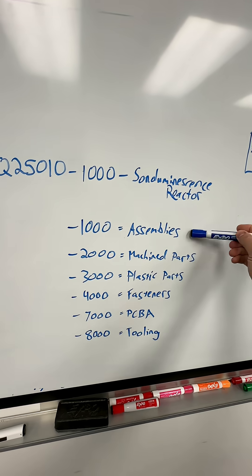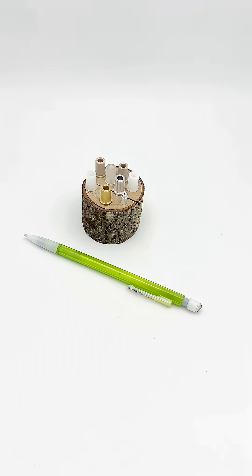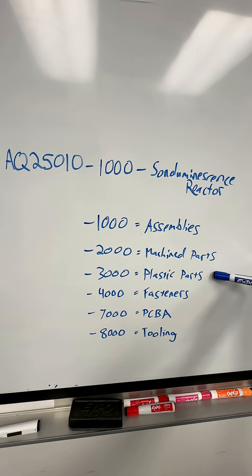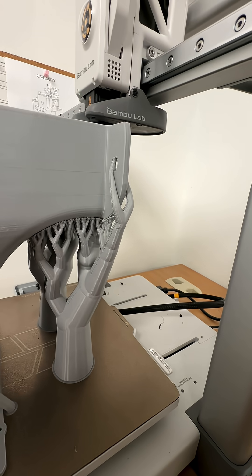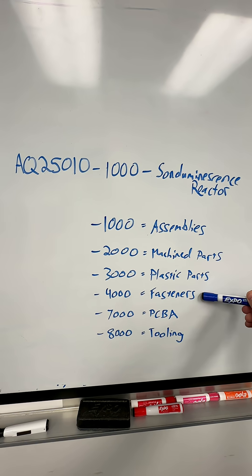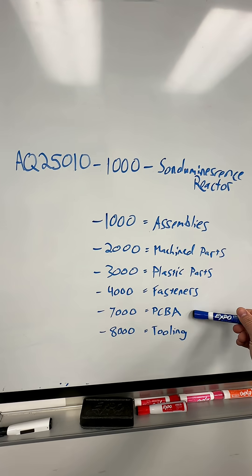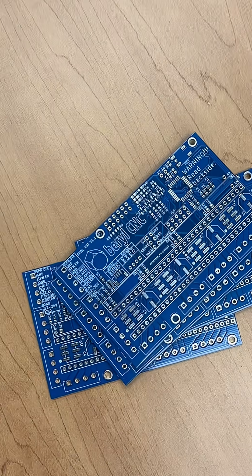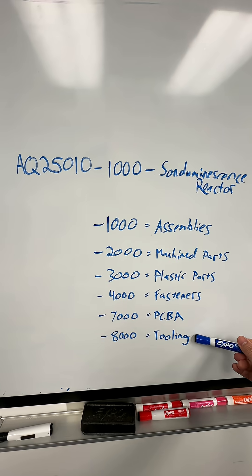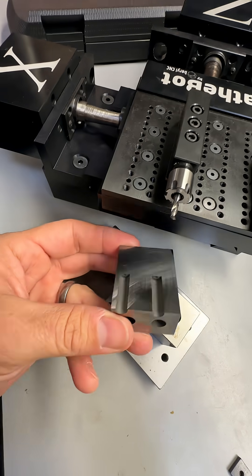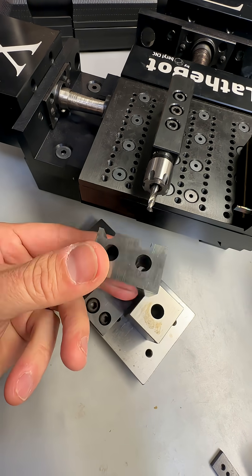We do a part numbering scheme here at Aqua Engineering where 1,000 level would be assemblies, 2,000 level would be machined parts, 3,000 level might be 3D prints or plastic parts, 4,000 is fasteners and miscellaneous. I have a 7,000 category for circuit boards and components, up to 8,000 or 9,000 which would even be tooling you might need for your project in a prototype sense. You give everything a part number so it has a home.